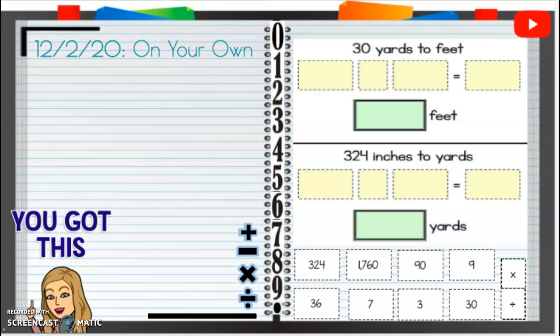We can look back at our conversions, or we can say, okay, I know that there's three feet in one yard. So for one yard, I know there's three feet. Well, how do I get from one to three? One to three, I multiply by three.